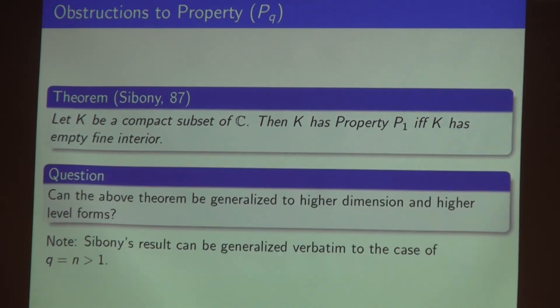We know that a compact subset on the complex plane has property P_1 if and only if K has empty fine interior. The motivation is to generalize to higher dimension, higher level forms. Short note: Sibony's result can be generalized verbatim to the case of q equal to n greater than 1. You just follow the proof. It's always true.